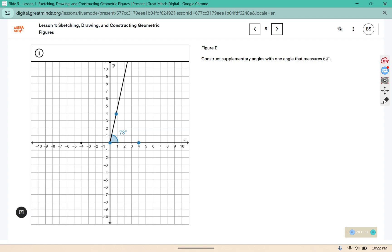Construct supplementary angles with one angle that measures 62. And you can see this other side here. There's a line that goes across the bottom, so this angle here would be the supplement to this angle 62.